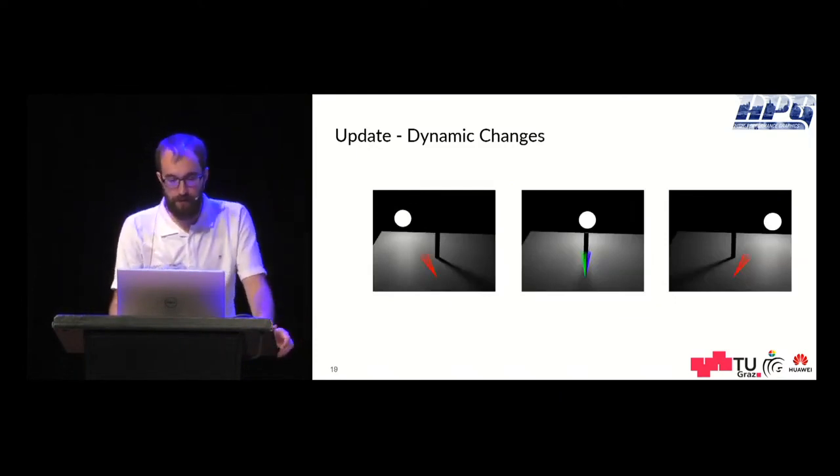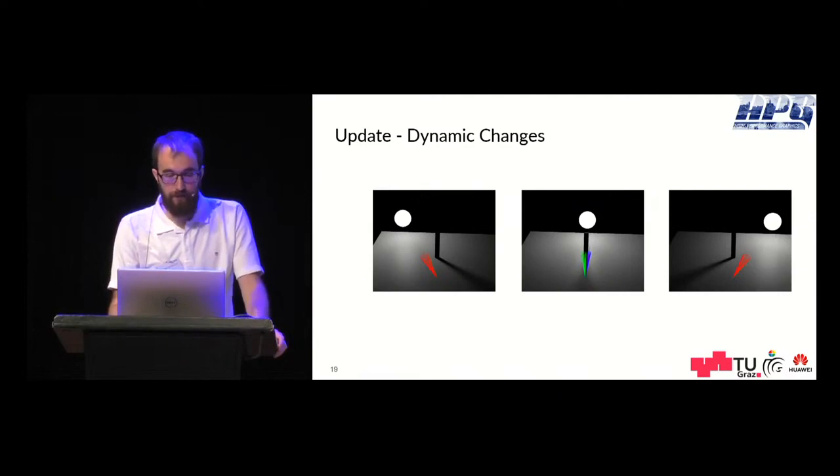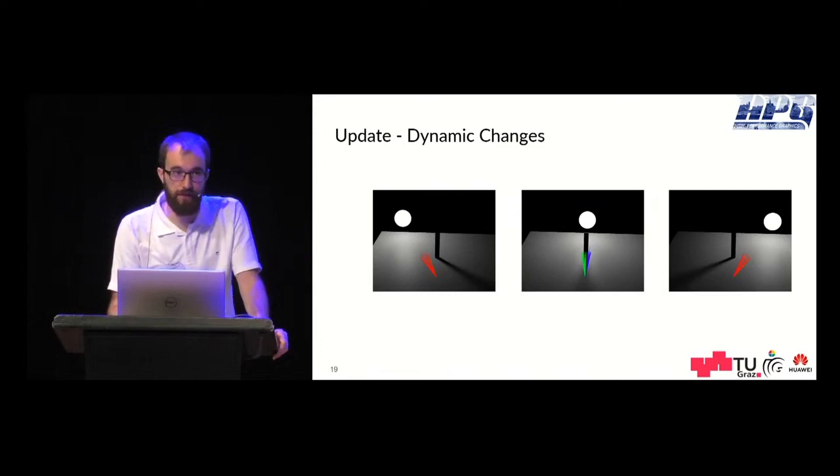In practice this looks like that where the light source moves from left to right and in the center image you see that the surface point becomes partially occluded and this is where the cones split up into two, and after the light source continues moving the cones merge again.